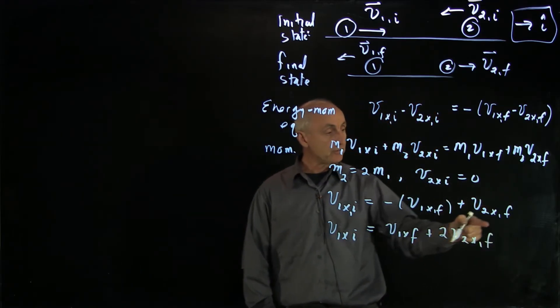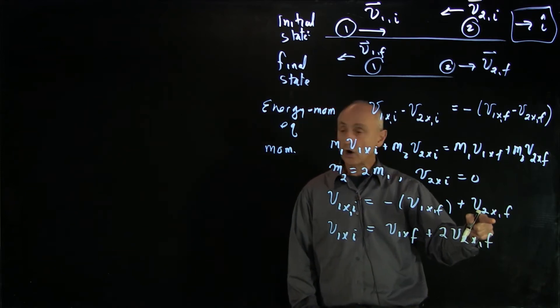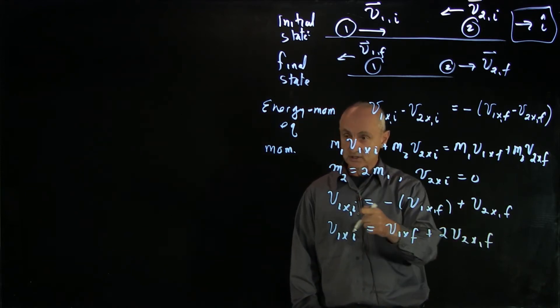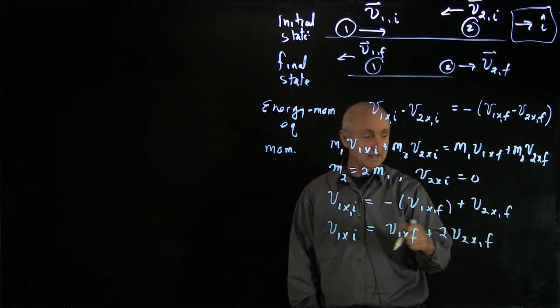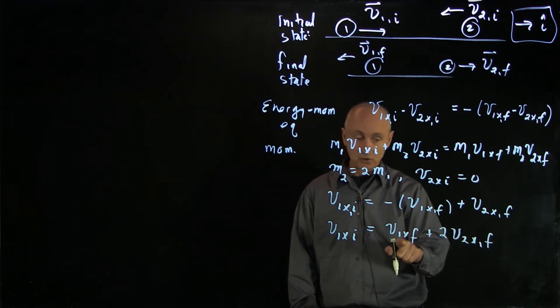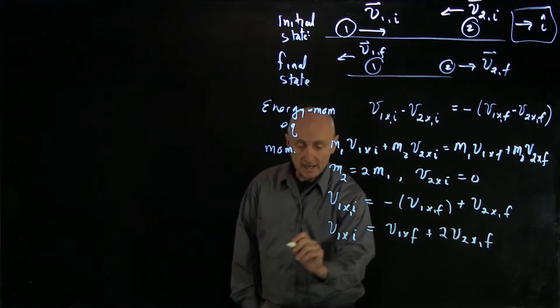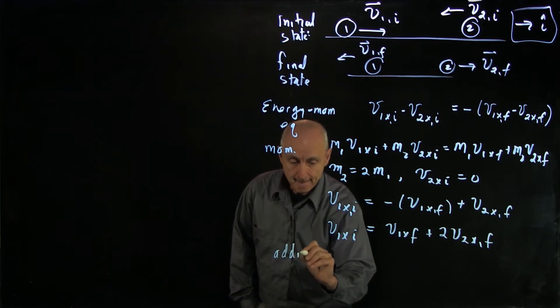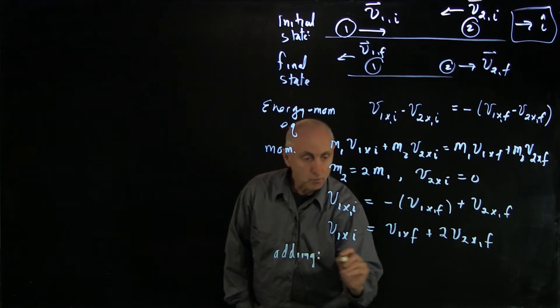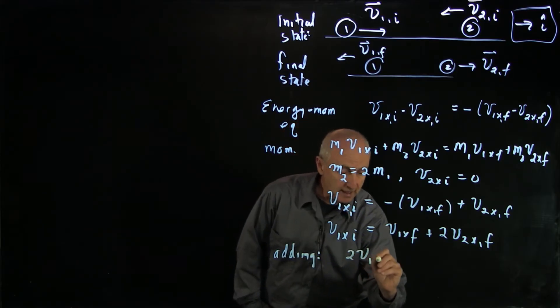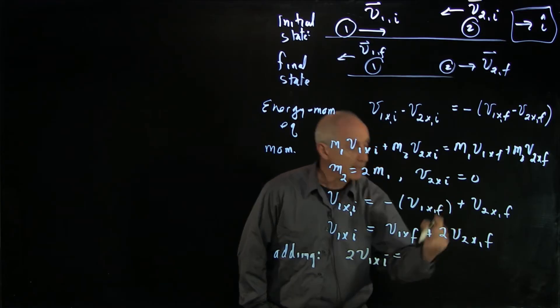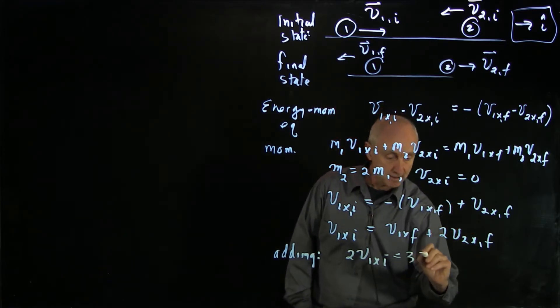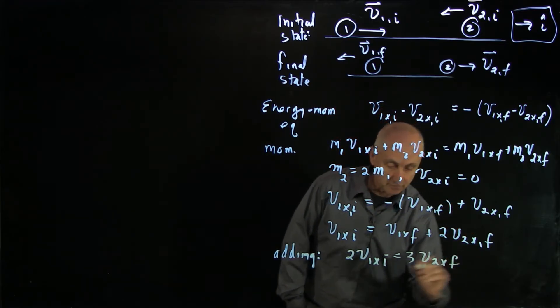Now I want to solve for our target variable. I look at these two equations. I can see almost immediately that if I add these two equations, v1 x initial will cancel. And I get, very simply by adding, we get 2 v1 x initial. And this is 3 v2 x final.